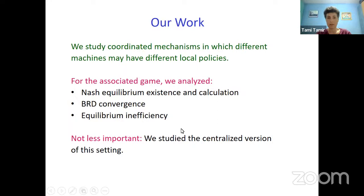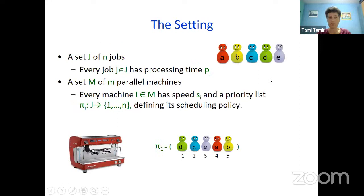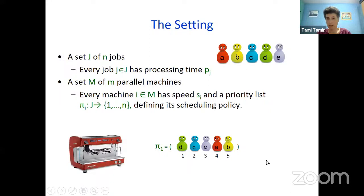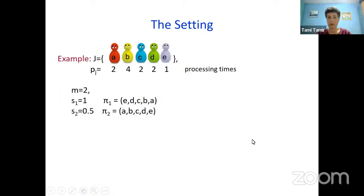This is the setting. We have a set J of n jobs, every job associated with processing time pj. We have a set M of m parallel machines — not necessarily identical. Machine i has speed s_i. And this is the new thing: machines have priority lists π_i. A priority list is just a permutation — it assigns every job an index, a rank, defining a scheduling policy.